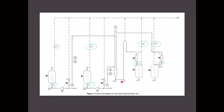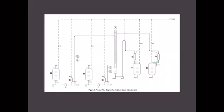Once liquid starts to overflow at the top of the column, stop pump 1 and switch on the stirrer at the control panel. The equipment is now ready for the experiment. For general shutdown procedures, switch off pump 1 and pump 2, then switch off the stirrer at the control panel. Open valves HV12, HV14, and HV16.